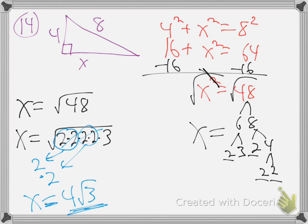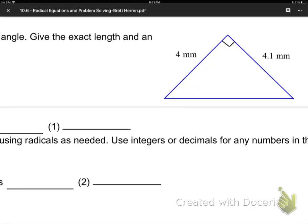Does that make sense? Whenever you have a right triangle, use A squared plus B squared equals C squared — the Pythagorean theorem. Let's try problem 15: they want you to find side x of another right triangle.